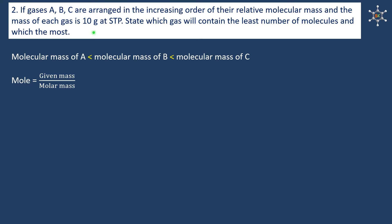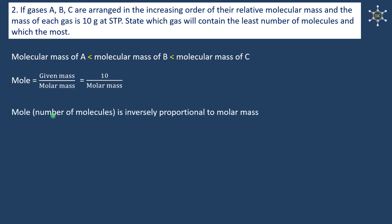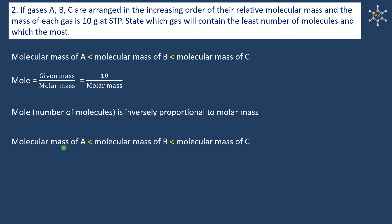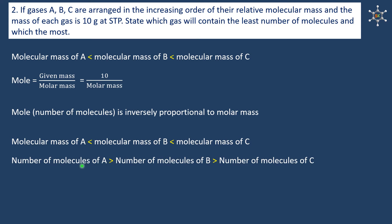Since we are considering 10 grams of all gases, the given mass is 10 grams for all. The number of moles indicates the number of molecules present, and moles is inversely proportional to molar mass. Greater the molar mass, lesser will be the number of molecules. Since molecular mass of A is least and C is highest, number of molecules of A must be highest and of C must be lowest.